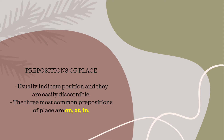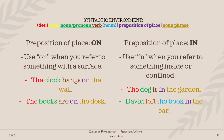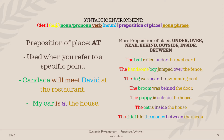Another type of preposition is prepositions of place. This one indicates position, and they are easily discernible. The three most common prepositions of place are on, at, and in. What makes this interesting is that these three prepositions are used to indicate both time and place, but they are easily discernible. The syntactic environment of preposition of place is just the same as the preposition of time. The preposition 'on' is used when you refer to something on a surface. For example, 'The clock hangs on the wall.'